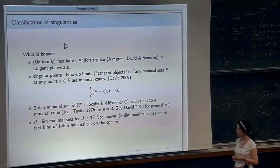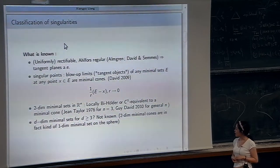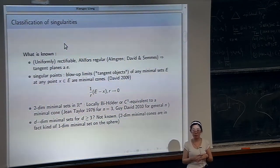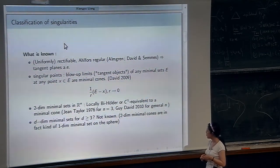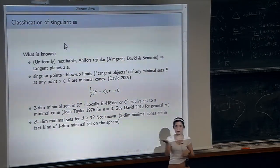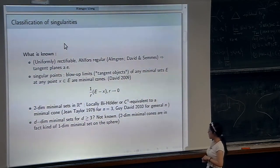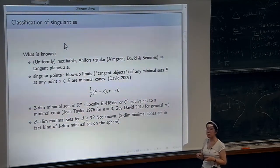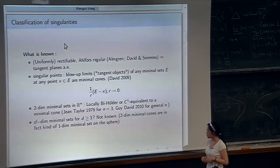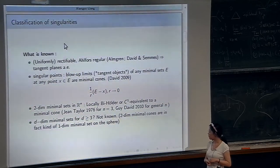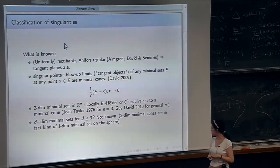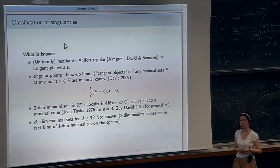The regularity results: first for two-dimensional minimal sets in R^3, given by Jean Taylor in 1976, stating that for any point in a two-dimensional minimal set in R^3, locally it is C^1 equivalent to a minimal cone — meaning it is a C^1 image of a minimal cone that fixes points and tangents. This was generalized by Guy David for general ambient dimension but still for two-dimensional minimal sets, giving a bi-Hölder equivalence rather than C^1. For d-dimensional minimal sets with d larger than two, not much is known, because two-dimensional minimal cones have particular properties that allow more knowledge about local structure for two-dimensional minimal sets in R^3.